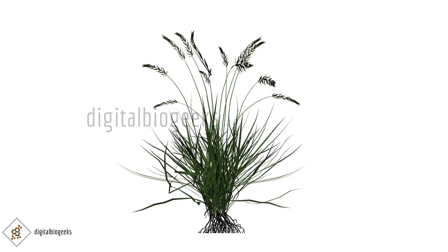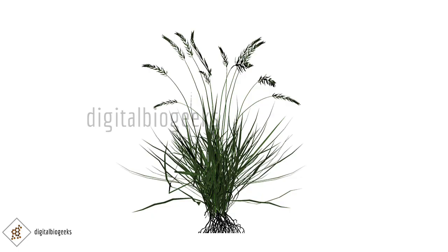Similarly, the adventitious roots in grass are known as crown roots. Crown roots are adventitious roots that are unique to grasses. They are present at the base of the stem, close to the soil surface. That part — the base of the stem — is known as the crown, and the roots arising from the crown are known as crown roots.